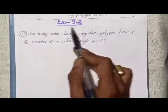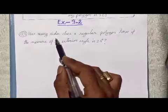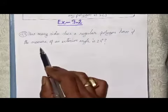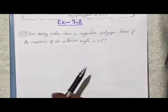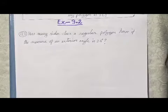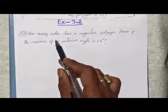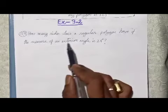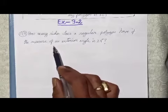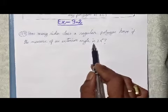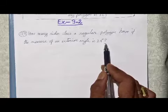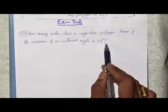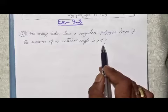Exercise 3.2, Question 3: How many sides does a regular polygon have if the measure of an exterior angle is 24 degrees? The question asks us to find the number of sides of the regular polygon if the measure of an exterior angle is 24 degrees.